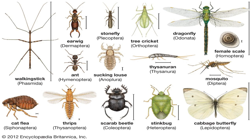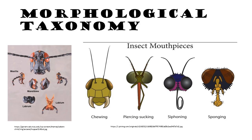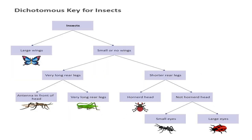First is morphological taxonomy. Morphological taxonomy classifies insects based on physical characteristics such as body shape, wing structure, mouthparts, and reproductive organs. Traditional morphological keys and descriptions have been foundational in identifying and categorizing insects.